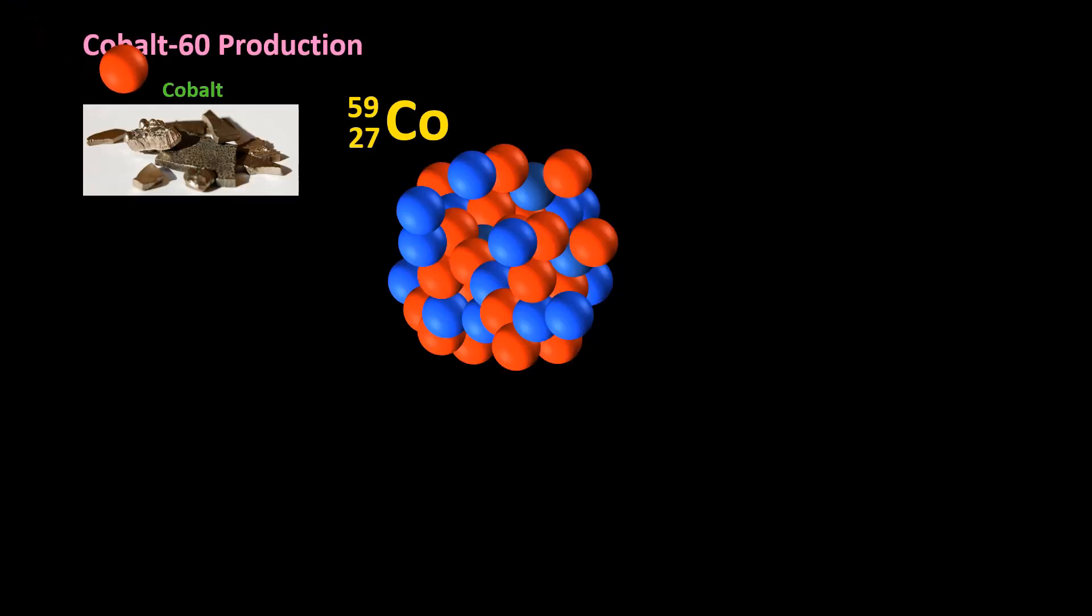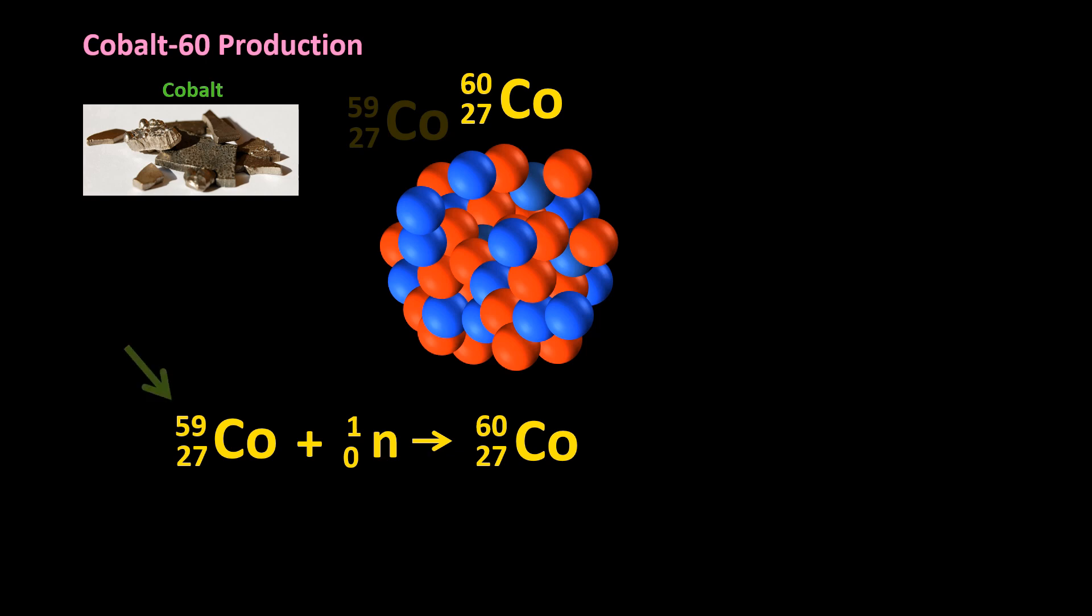If a neutron crashes into a cobalt-59 nucleus, it sticks to it and cobalt-60 is produced. The nuclear equation is pretty simple. The stable cobalt-59 nucleus becomes an unstable cobalt-60 nucleus.